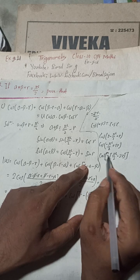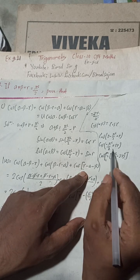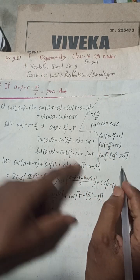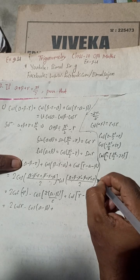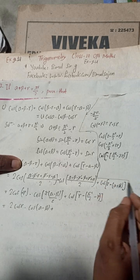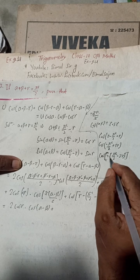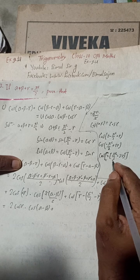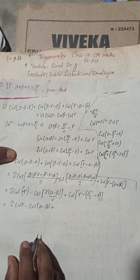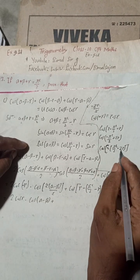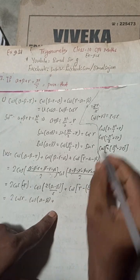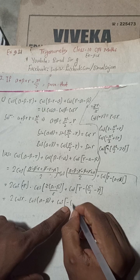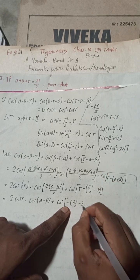I already told you: cos(minus anything) equals positive. So cos(minus gamma) equals cos gamma. Therefore this becomes cos(pi/2 minus 2 gamma). To simplify, I will write: cos(minus(pi/2 minus 2 gamma)) — it is better to expand the line for students to follow — equals cos(minus pi/2 minus 2 gamma) in the next line.